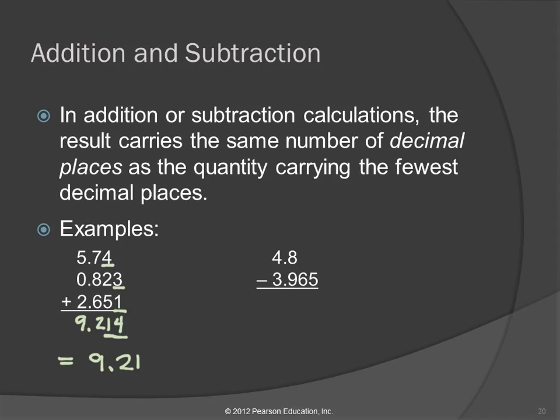Let's do this one: 4.8 minus 3.965. Feel free to use your calculator. My calculator says 0.835. Let's try using the rule. The rule says fewest number of decimal places. How many decimal places in the first number? 1. How many in the second? 3. So that tells us our answer should only have one decimal place. We should round it to 0.8. The next digit is 3, that's less than 5, we round down. 0.835 is closer to 0.8 than to 0.9.